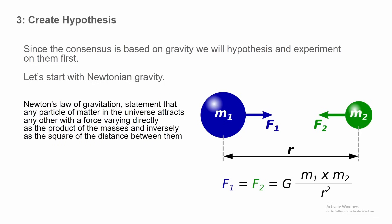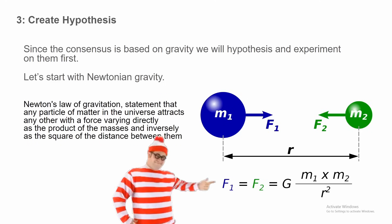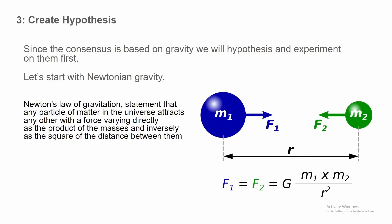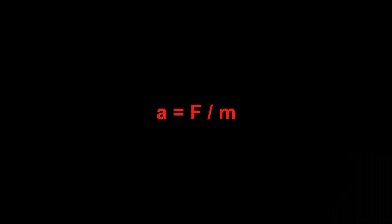Any particle of matter in the universe attracts any other with a force varying directly as a product of the masses and inversely as the square of the distance between them. So in other words, the larger mass will attract the smaller mass more. No mate - the force between them is the same, and you even have it on screen: F1 equals F2. The acceleration of each is different due to their mass being different - a equals F divided by m. Mate, you are well in over your head, ironically enough.